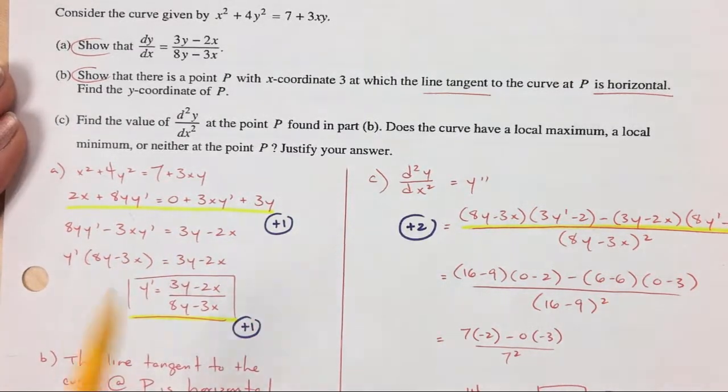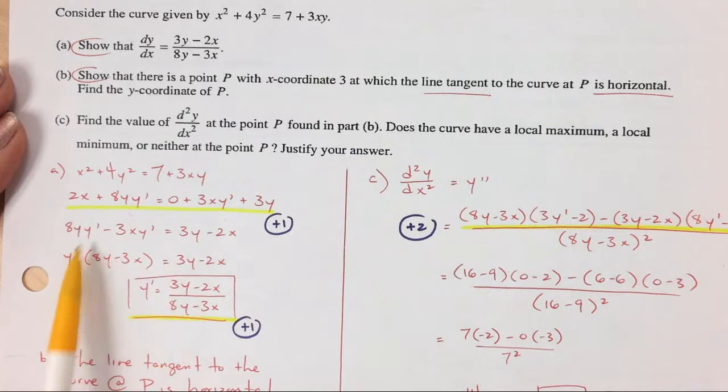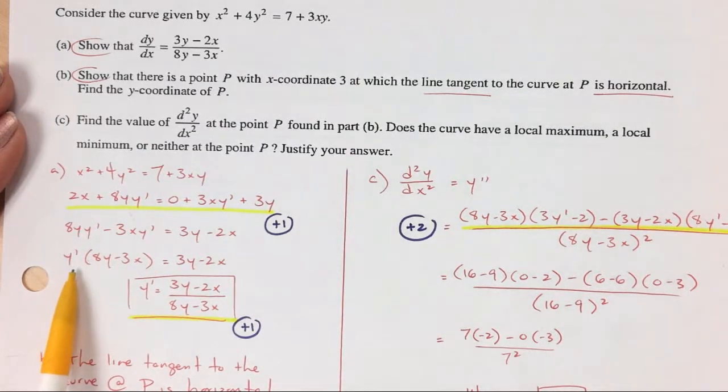And then to finish that part off, y primes get isolated on the left side. Everything else goes on the right. And then your y prime gets factored out, and you divide everything by that. And you have your fraction, which looks the same as what they wanted. So we're happy. Done!